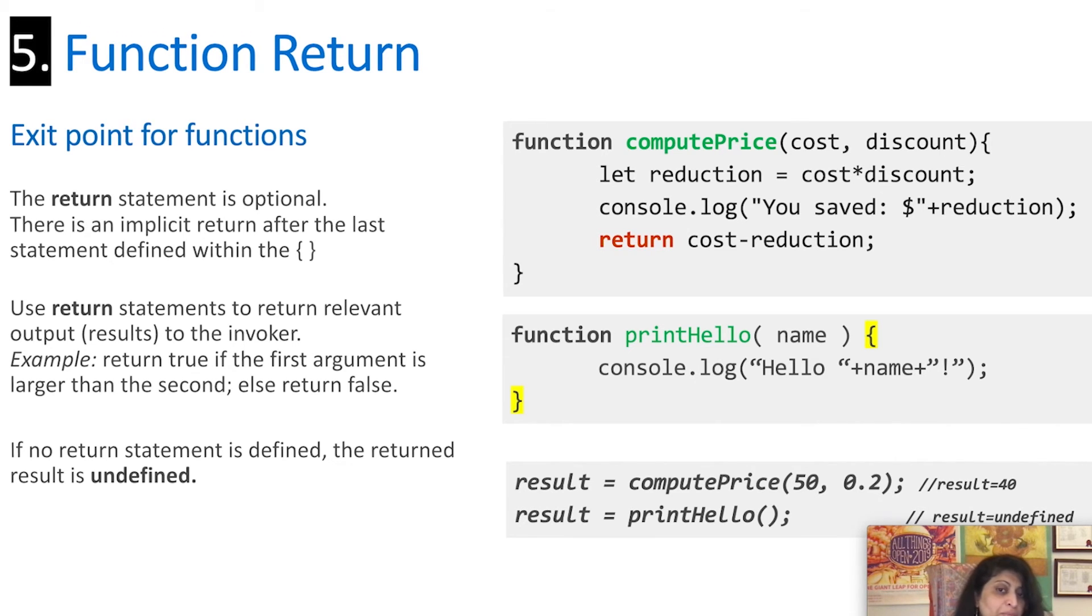So this is a great way for you to provide results based on the computations or execution of tasks that you did. In this particular example for compute price, we're using the return statement to return the value, the computed price, based on the cost of the item and the discount that has been provided. Again, if you didn't have a return statement, by default, the value returned is undefined. So you'll see in the example there that when I call compute price with the right values, I get a proper result. But when I call print hello, which doesn't have any parameters and has no return statement, I simply get back undefined.